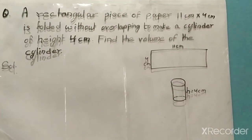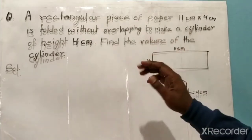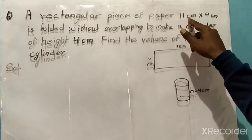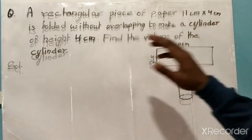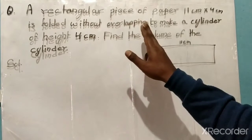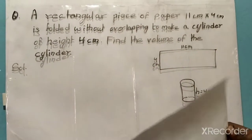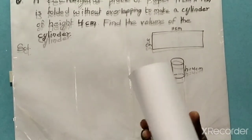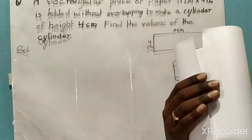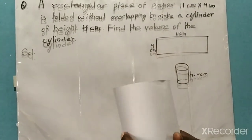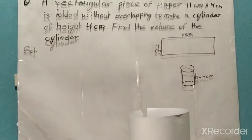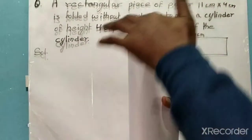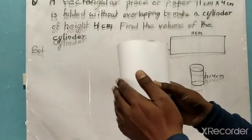Let's briefly discuss the question. A piece of paper of size 11 centimeter by 4 centimeter is given, and it is folded without overlapping. Without overlapping means one side should not go over the other. And it will be in the cylindrical shape — this will be cylindrical in shape, and the ends will be circular in shape.